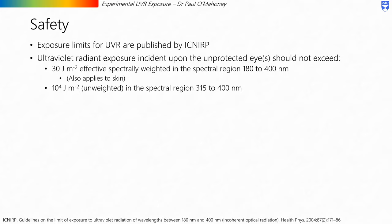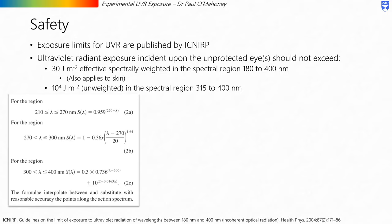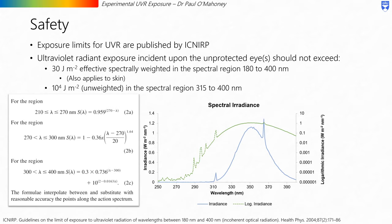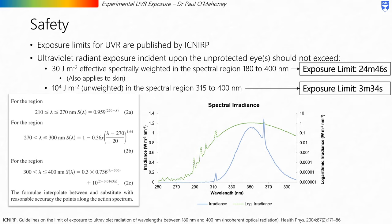The action spectrum referred to when weighting the spectrum can be found using the formulae provided, which can be entered into an Excel sheet to give the relevant action spectrum. As an example, taking our light source from before, we multiply it by the action spectrum, sum together all values to get the irradiance, and then divide that into 30 joules per metre squared — that is radiant exposure divided by irradiance — which gives the maximum permissible exposure limit, in this case 24 minutes and 46 seconds. As both limits apply, we similarly calculate the risk from the second criterion and find a maximum permissible exposure limit of 3 minutes and 34 seconds. We would always abide by the lower of these two values.